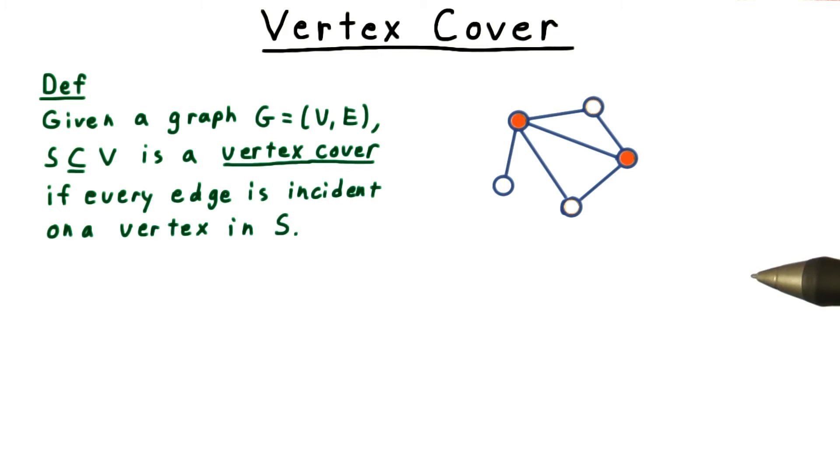Clearly, the set of all vertices is a vertex cover, so the interesting question is how small a vertex cover can we get?